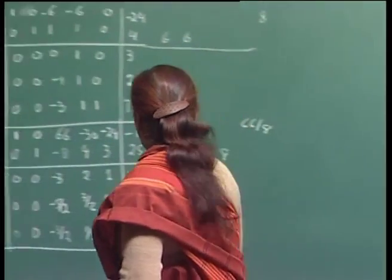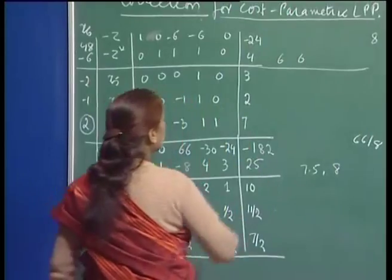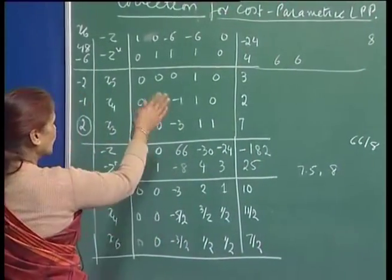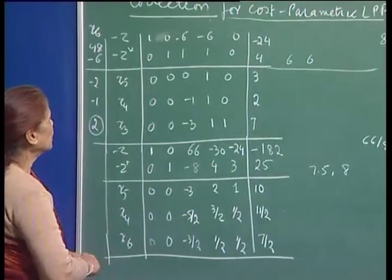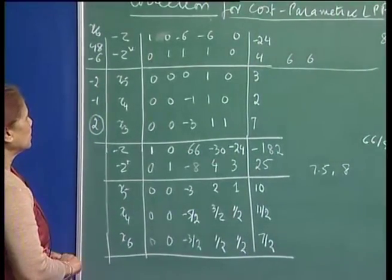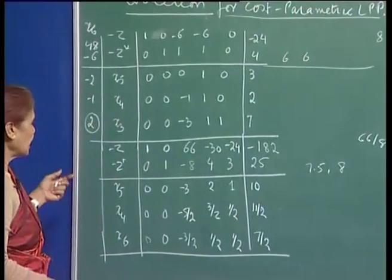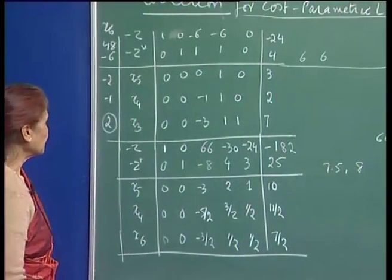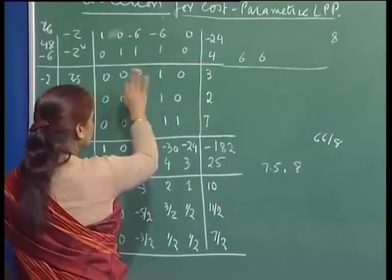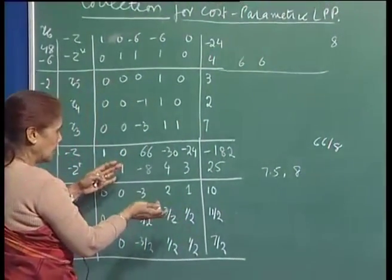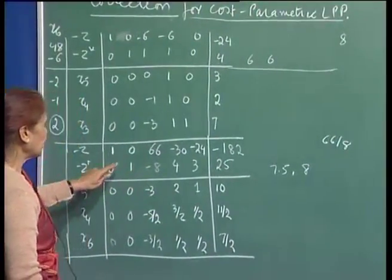I had pointed out in the last lecture that there was a little error in computing this number. I have just done the last two tableaus again. This is the inverse tableau presentation of the LPP algorithm for the parametric cost problem. The problem we were discussing in the last lecture continues here. The correction was somewhere here, so just make sure you compare with the tables in the last lecture and make the corrections wherever necessary.